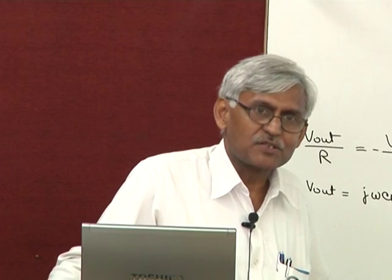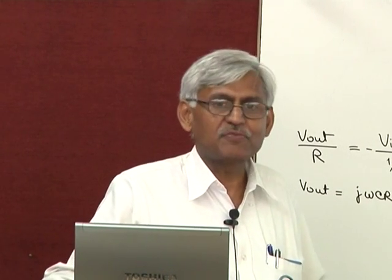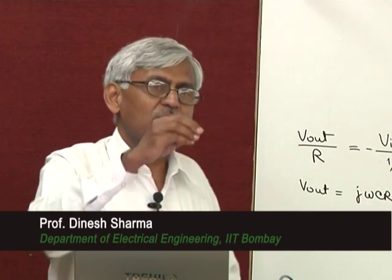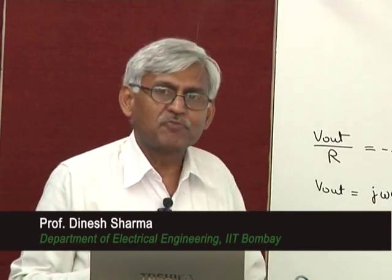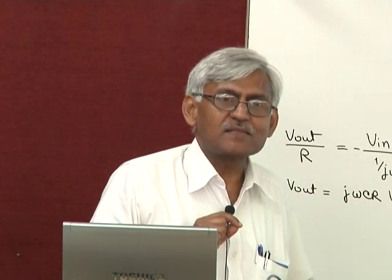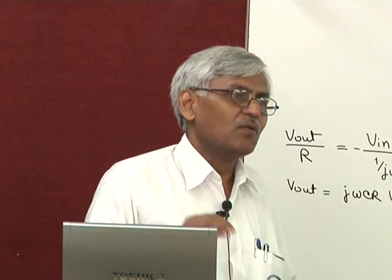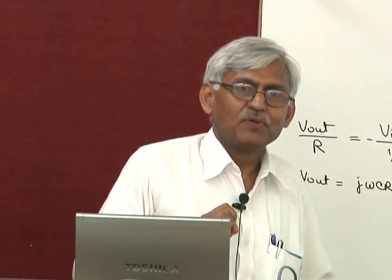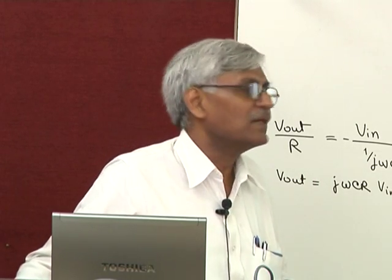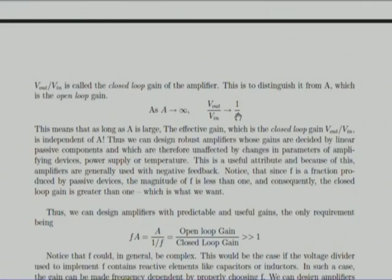If F times A is very large, the actual gain does not matter — the output is determined by F, not by A. So you can be free of transistor parameters. If beta equals 100 you get one gain; if beta equals 150 you get another — that is not good. The negative feedback is set by passive components and they define the gain. So if the gain is in a sufficiently high range, this amplifier will behave exactly the same regardless of the exact value of beta.